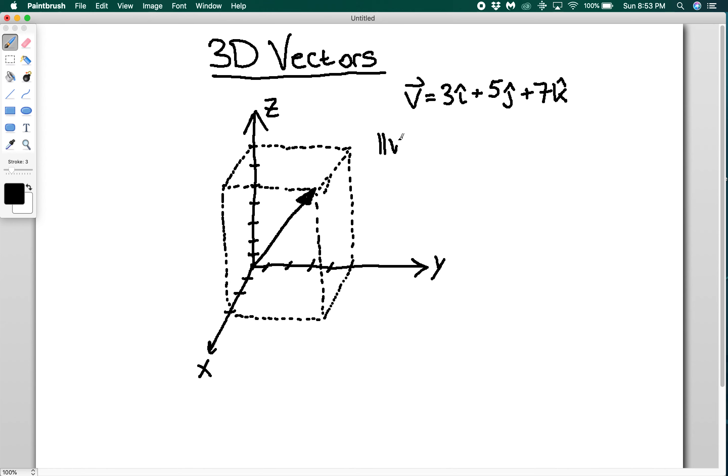To find the magnitude, if I want to find the magnitude of my vector v, you find it the same way you do before, where you take the square root of the sum of the squares of the components. So I would do square root of 3² + 5² + 49² — sorry, + 7².